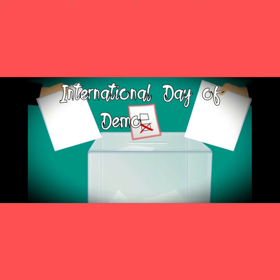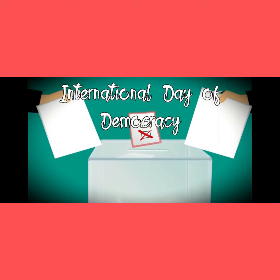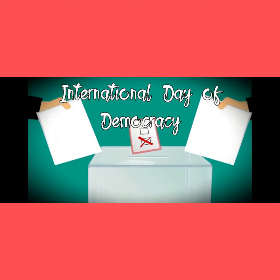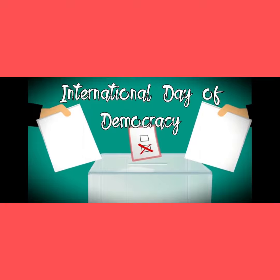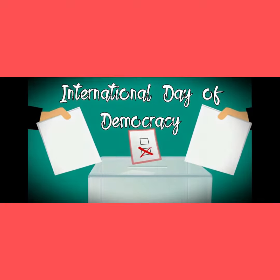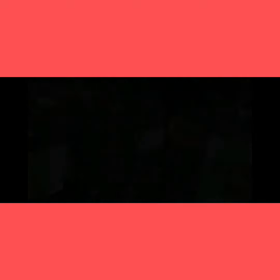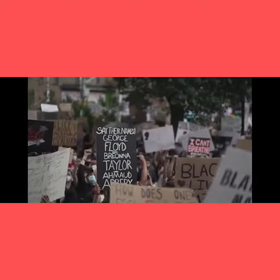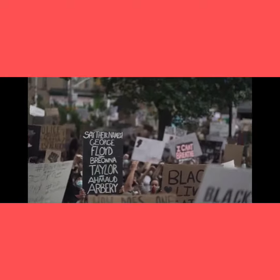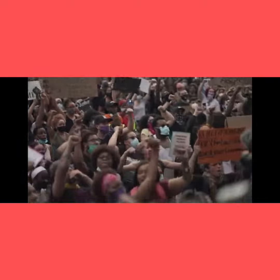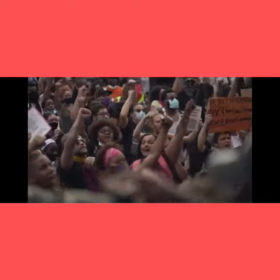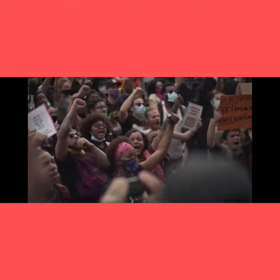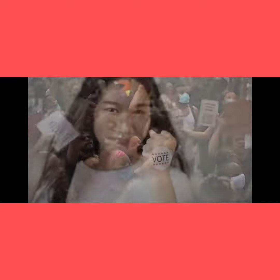International Day of Democracy is celebrated around the world on 15th September each year. It was established through a resolution passed by the UN General Assembly in 2007, encouraging the government to strengthen and consolidate democracy.